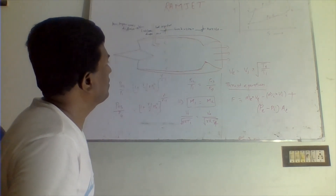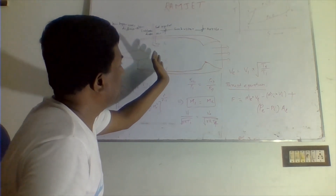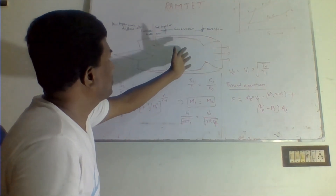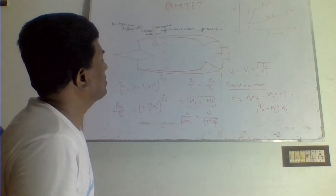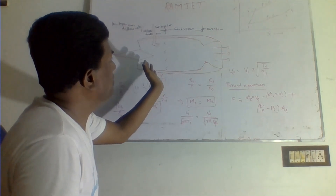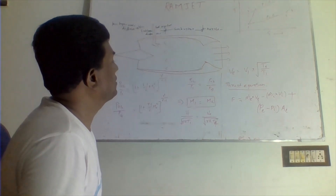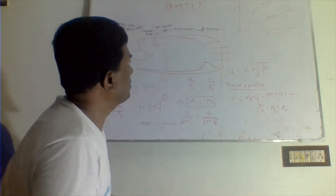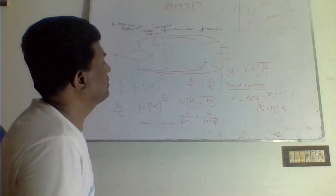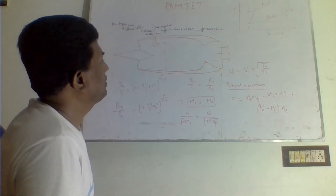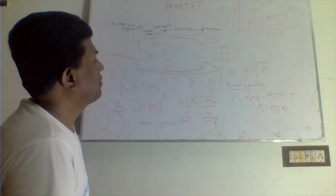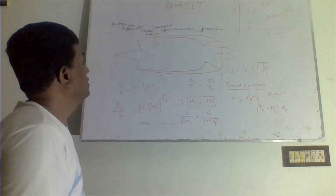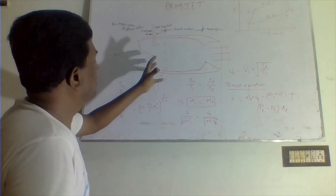The hot combustion gases escape through the nozzles. At the exit of the combustion chamber there is higher pressure and temperature, which is converted into higher kinetic energy as the gases pass through the nozzle. This produces sufficient jet velocity to develop thrust for the ramjet engine.